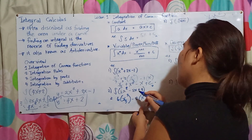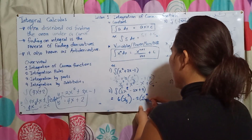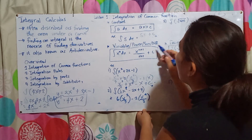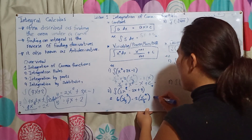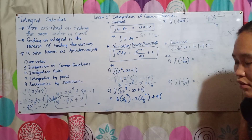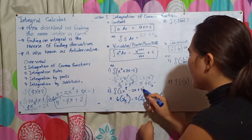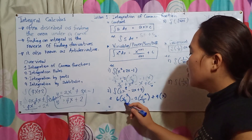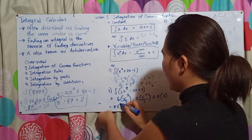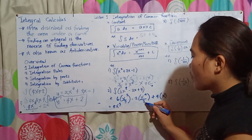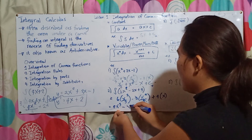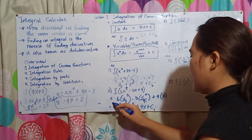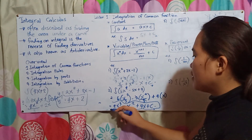Continuing: 6x³/3 reduces to 2x³. Then −2x²/2 cancels to −x². Plus 4, since there's no variable, becomes 4x. So the final answer is 2x³ − x² + 4x + C.